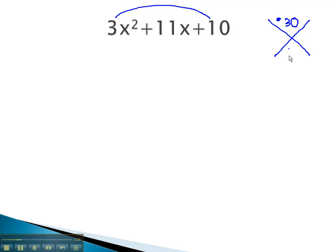And we want to add to the bottom, the middle number, 11. There are several ways to multiply to 30. For example, 2 times 15. However, you notice those numbers will not add to the 11 we want.